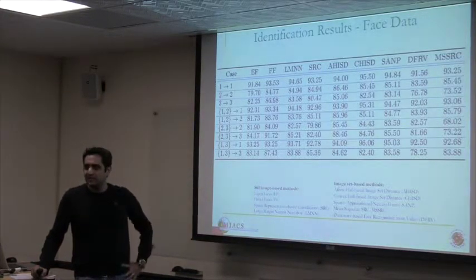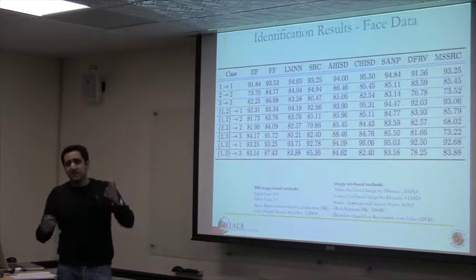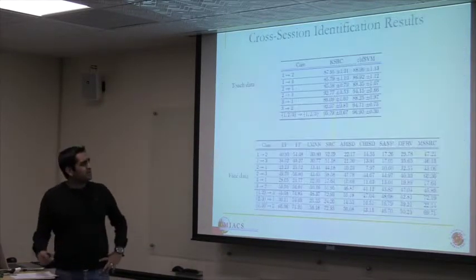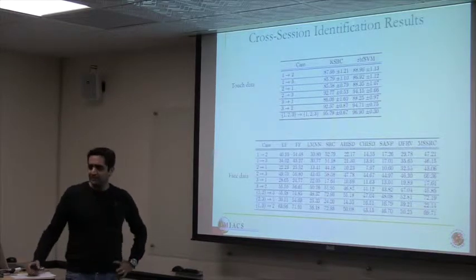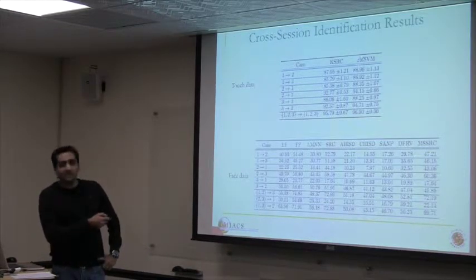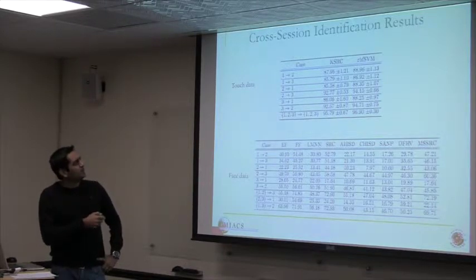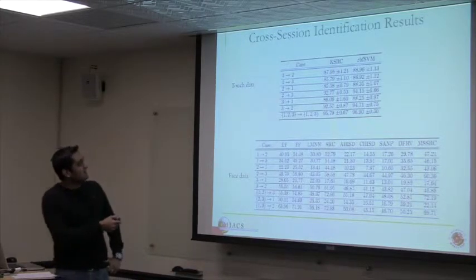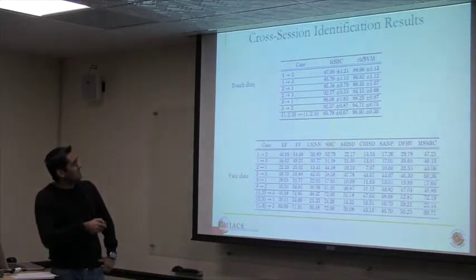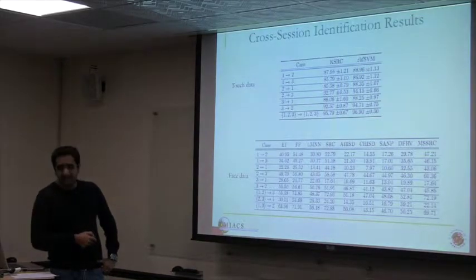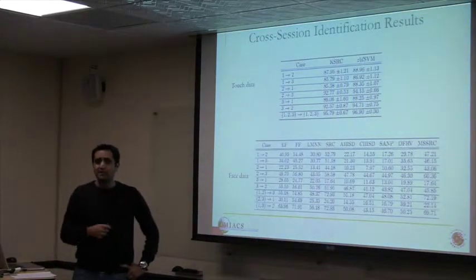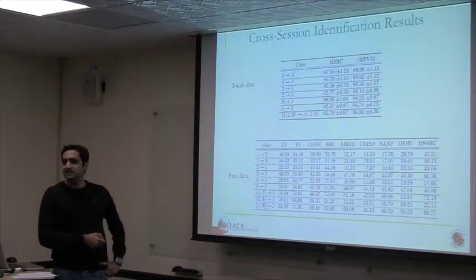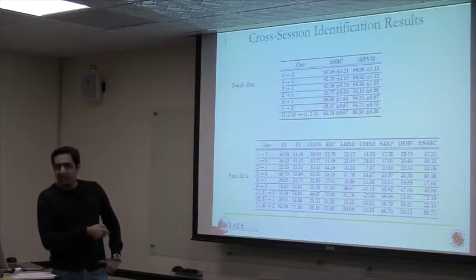Because we collected data in different sessions, we now do cross-session classification — training on session one and testing on session two data. When we do that, we see a degradation in performance. The degradation is not that much for touch data, but for face data the degradation is tremendous. Before the numbers were in the mid 90s, but now they're in the mid 40s — even below in some cases. So what is going on here?